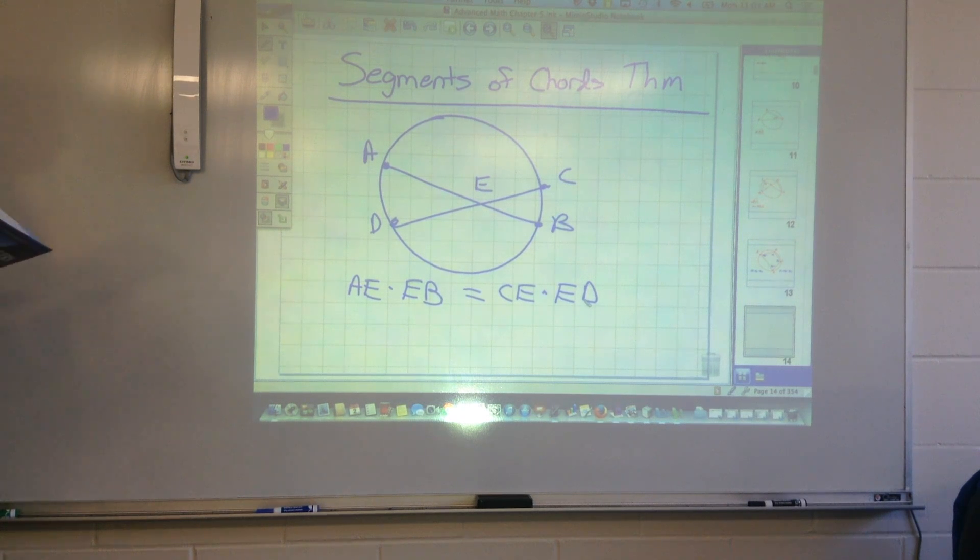It wouldn't have to intersect in the center, it's just if two chords intersect anywhere inside the circle. So whether it's on the diameter or not on the diameter, as long as they intersect, this theorem applies. Alright?